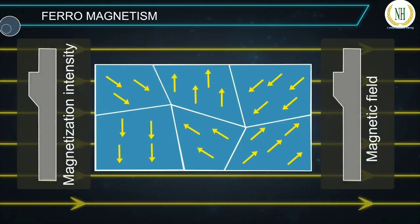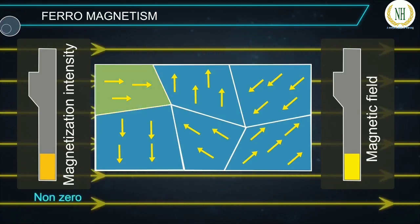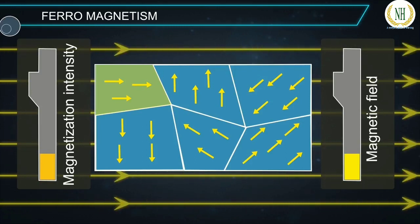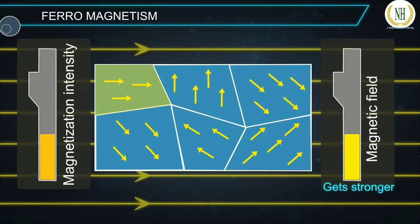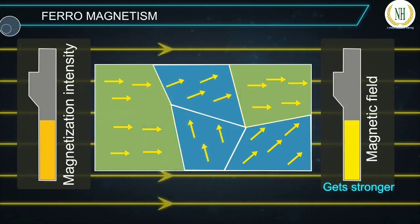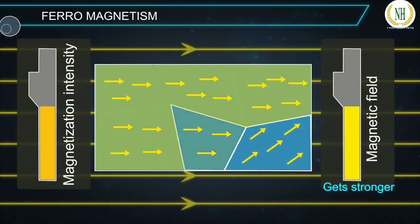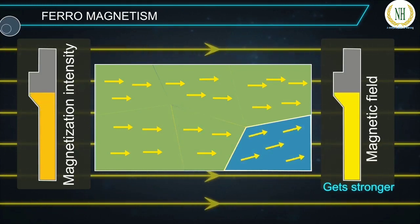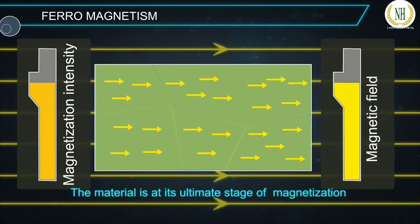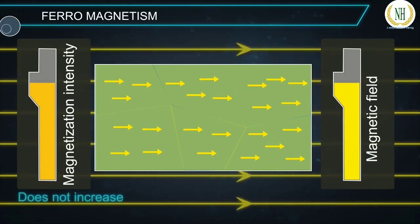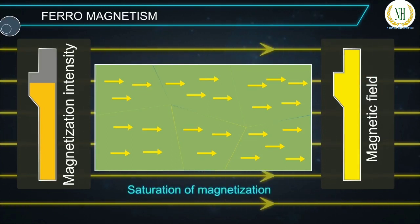In the presence of an external magnetic field, the domains start to align in the direction of the applied field and the magnetization intensity becomes non-zero. As the field gets stronger, more and more domains align with it and magnetization goes on increasing. For a particular strong magnetic field, all domains align with the field — the material reaches its ultimate stage of magnetization. Beyond this point, magnetization does not increase even if the external field is increased. This stage is called saturation of magnetization.